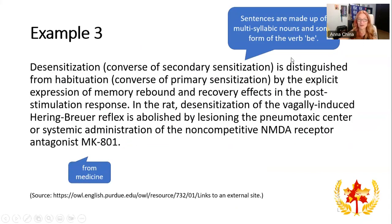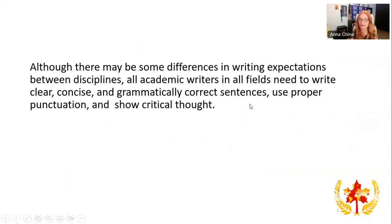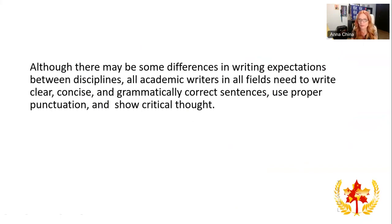The second example has some literature — the name of a literary writer, and then the word poem. It's a literary device with themes, and there are many words that guide us to understand this comes from literature. And then the last one comes from medicine — some of the words I can barely pronounce and had to practice. So although there may be differences in writing expectations between disciplines, academic writers in all fields need to write clear, concise, and grammatically correct sentences, with correct punctuation and above all, critical thought.